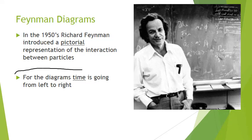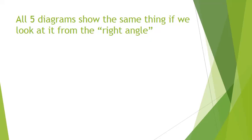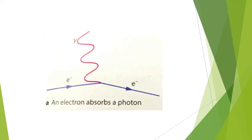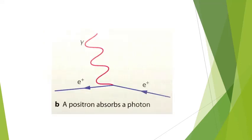For the diagrams you're going to see here, time is going from left to right. The next five diagrams show the same thing if we look at it from the right angle. Here, you have an electron that absorbs a photon — it's kind of like a collision: these two collide together and move off together.